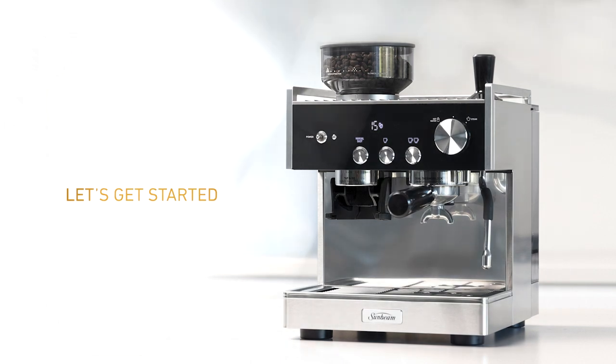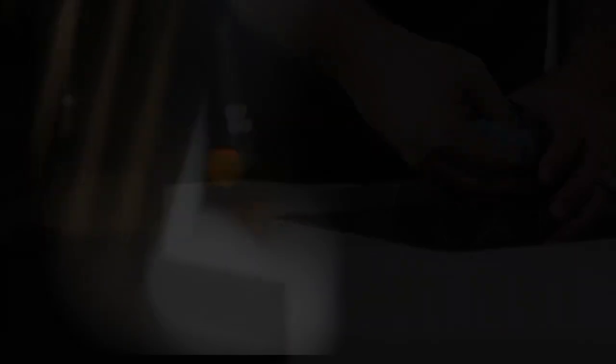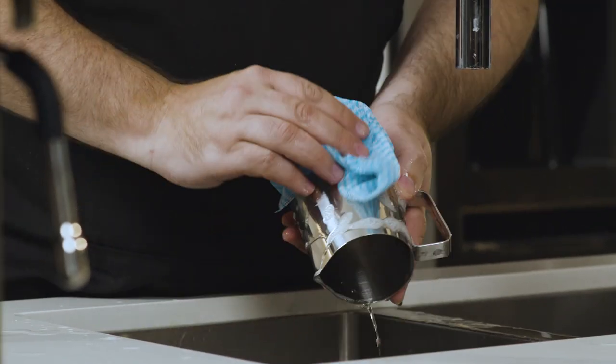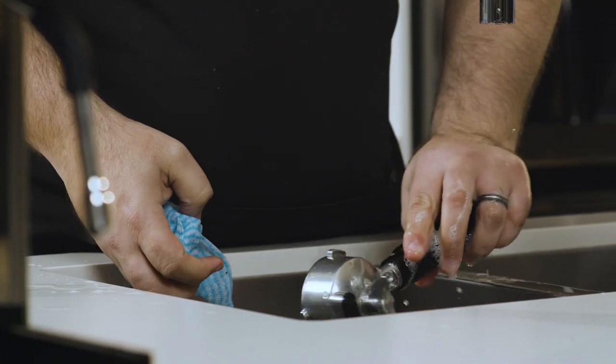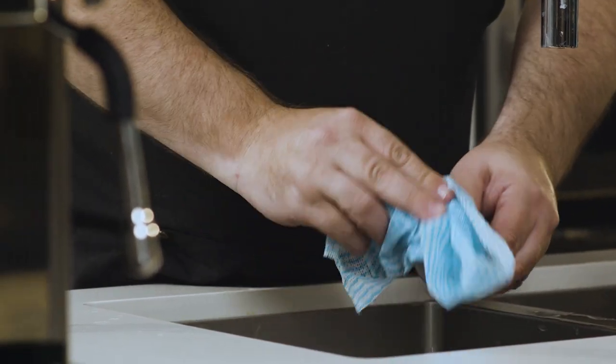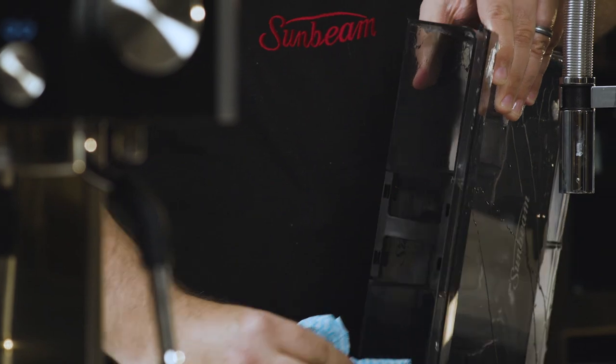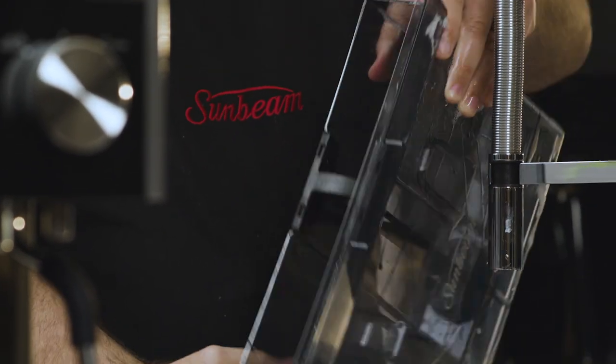After you've unboxed your Origins espresso machine you'll need to rinse the grinder hopper, removable top burr, milk jug, filter basket, group handle, tamper and water tank in a bit of warm water with a mild detergent, making sure items are thoroughly dried before using.